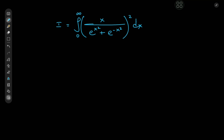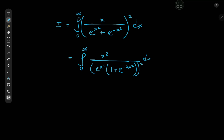So how exactly should we begin? From the denominator, I'd like to factor out the e to the x squared term first. So we'll write this as the integral from 0 to infinity of x squared divided by e to the x squared times 1 plus e to the negative 2x squared, and this whole thing is of course squared. So e to the x squared squared is e to the 2x squared, so I can write this as the integral from 0 to infinity of x squared divided by e to the 2x squared times 1 plus e to the negative 2x squared, squared dx.